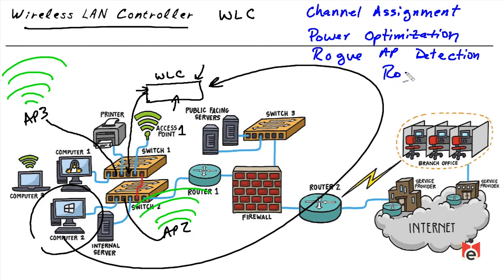Because wireless networks may be on different VLANs, when a user roams between access points while walking around, the access points tunnel all traffic back through the controller. The controller can perform trickery to allow the wireless client to maintain connectivity even while transitioning between different access points and potentially between different VLANs.